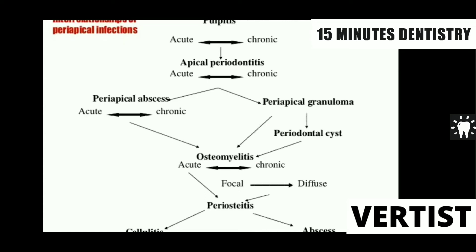The sequelae of pulpitis will cause acute pulpitis, chronic pulpitis, periapical abscess — acute and chronic — that will lead to granuloma, which can lead to a periapical cyst also called radicular cyst. From that it can lead to osteomyelitis. Or sometimes it will cause abscess leading to cellulitis — that means facial space involvement. Or most commonly there can be a sinus formation.